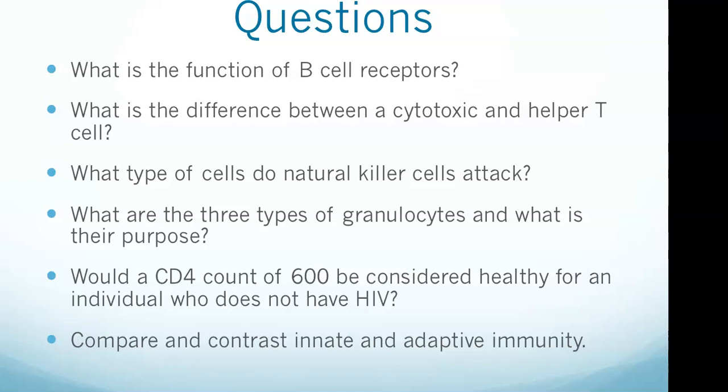So we want to know what B cell receptors are, the difference between cytotoxic and helper T cells, what type of cells natural killer cells attack, the three types of granulocytes and their purpose, familiarity with CD4 count and what that means, and then innate and adaptive immunity.